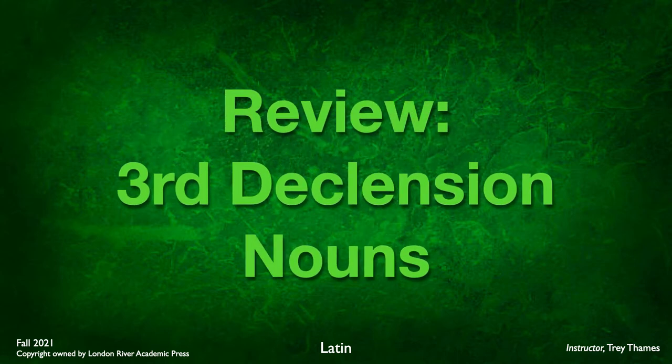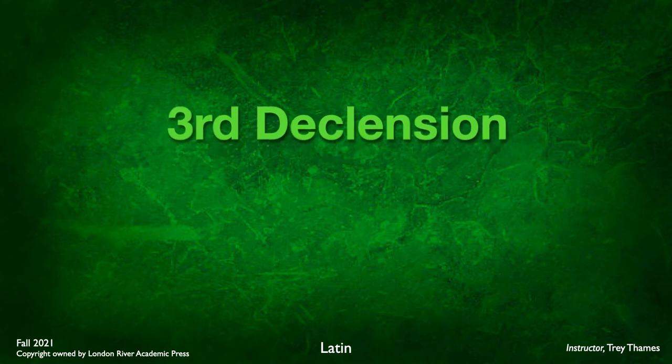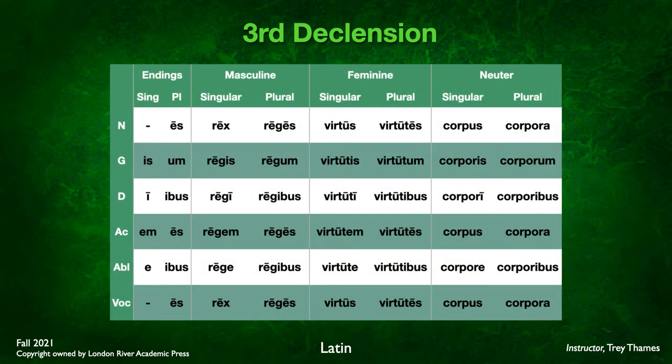Let's review our third declension noun endings from a few chapters back. For masculine and feminine, the endings are: blank, IS, E, M, E in the singular. Vocative matches the nominative. In the plural: ES, UM, IBUS, ES, IBUS, ES. Note the macron over the dative singular I, and macrons over the nominative and accusative plural ES.